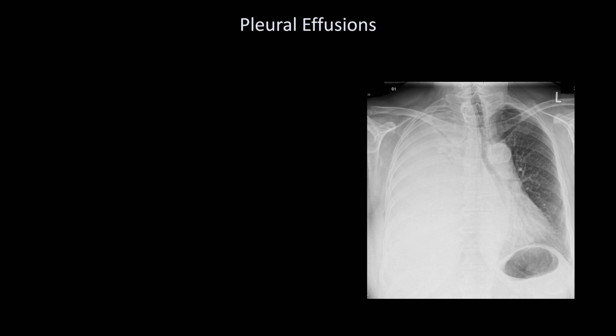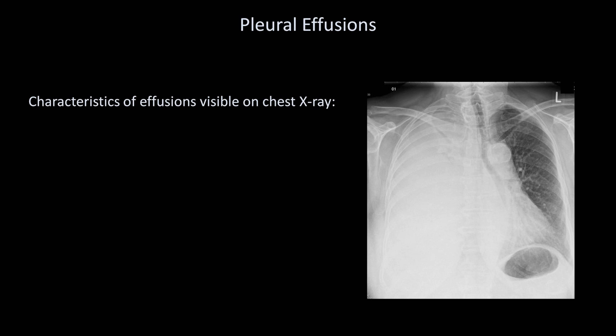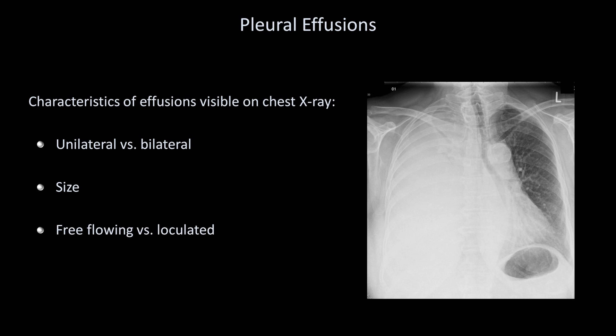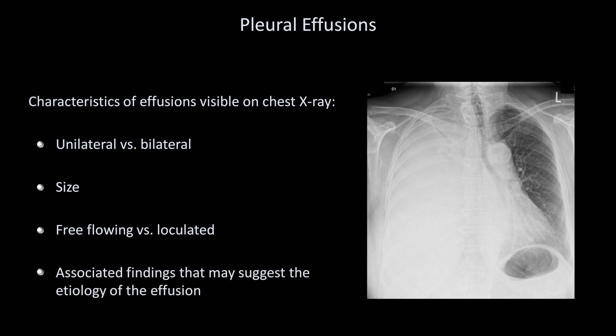Next up are pleural effusions, which are collections of fluid in the pleural space. Here's a particularly dramatic one. The characteristics of an effusion that you should be able to describe based on an x-ray include whether it is unilateral or bilateral, a qualitative impression of its size, whether it is free-flowing or loculated, and any associated findings that may suggest the etiology of the effusion, such as cardiomegaly and pulmonary edema suggesting CHF.